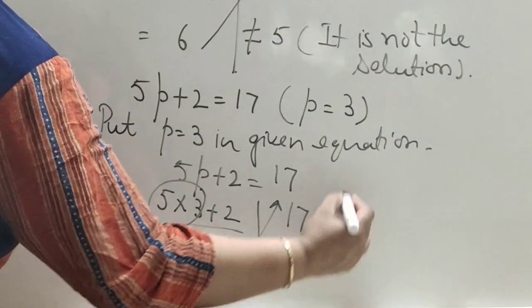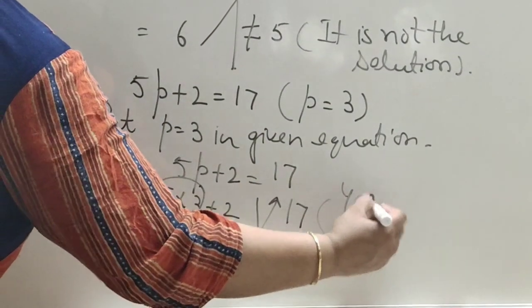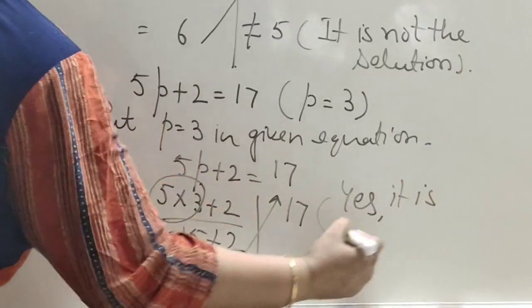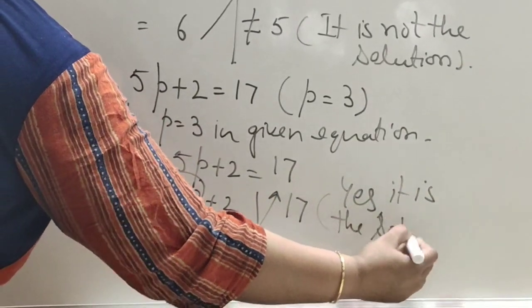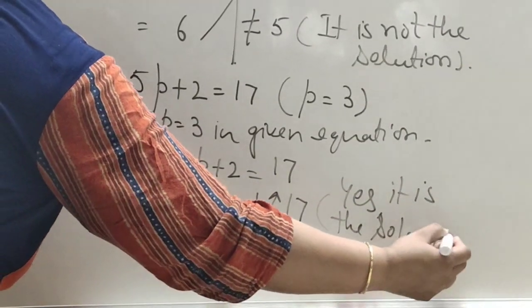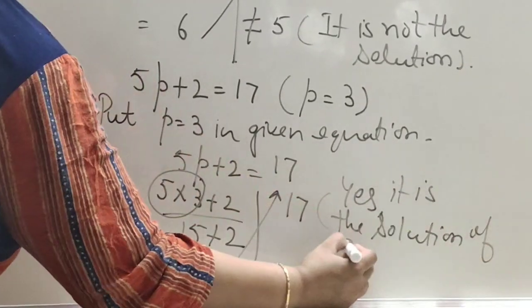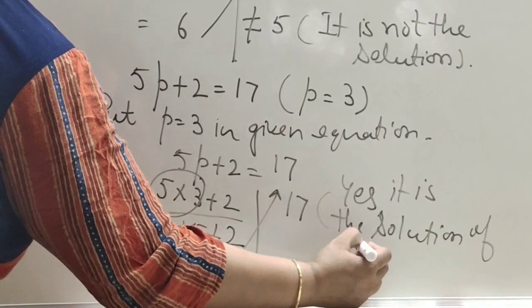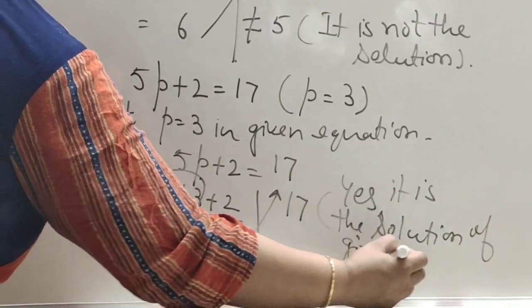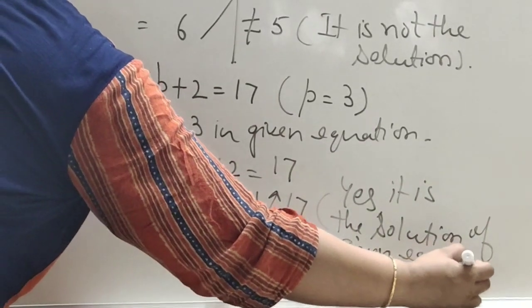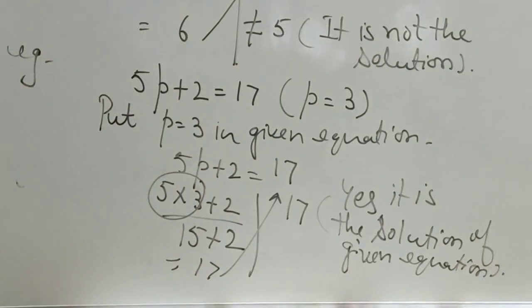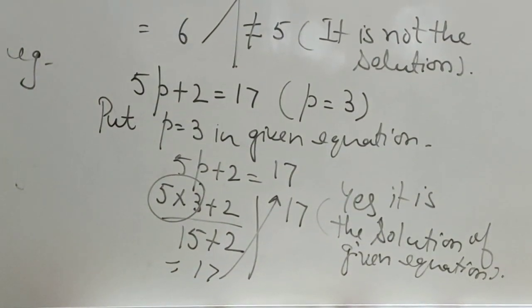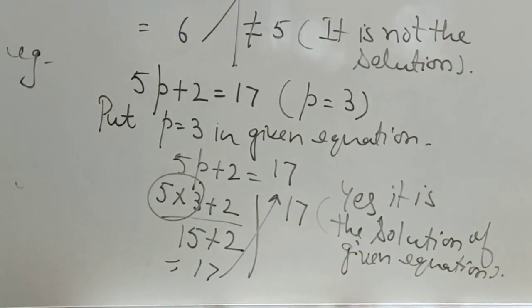Since 17 does not match 7, P equals 3 is not the solution of the given equation. By this way, you can check whether a given value is the solution of an equation or not.